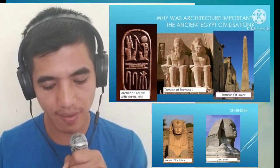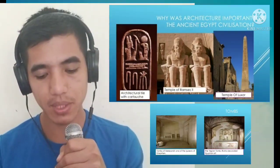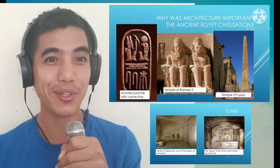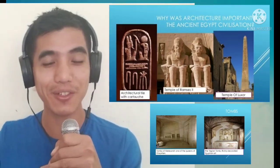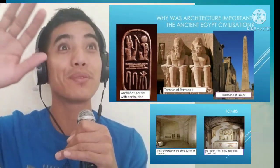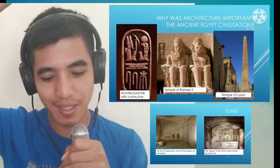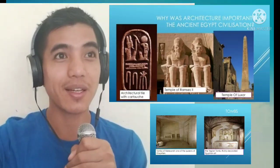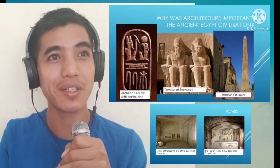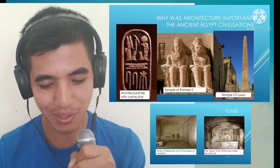These are the Avenue of the Sphinx and the Giza Sphinx. How did they make these? Through remarkable architecture — carved out of stone and mountain, they built these incredibly large structures.